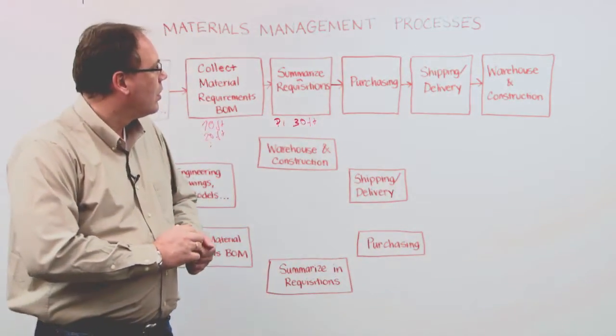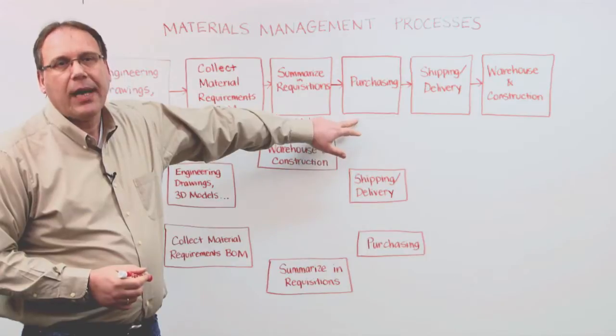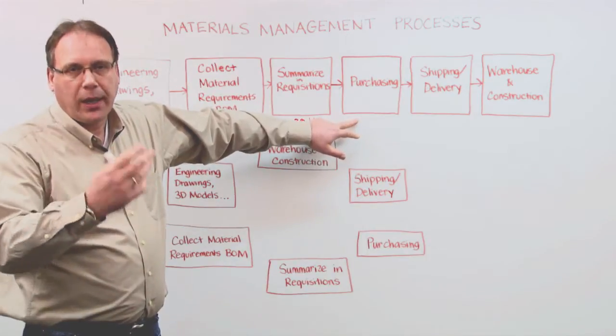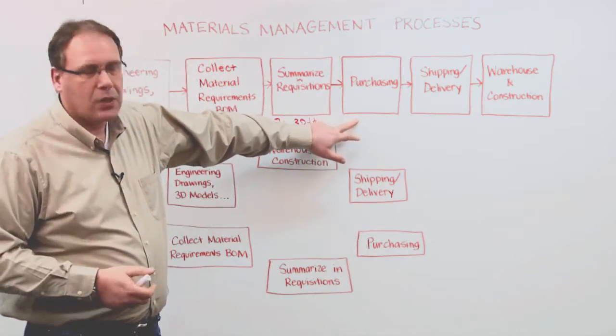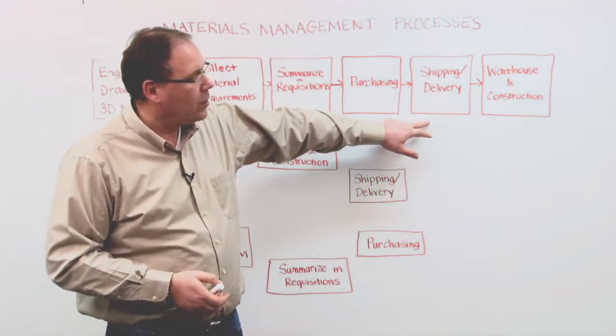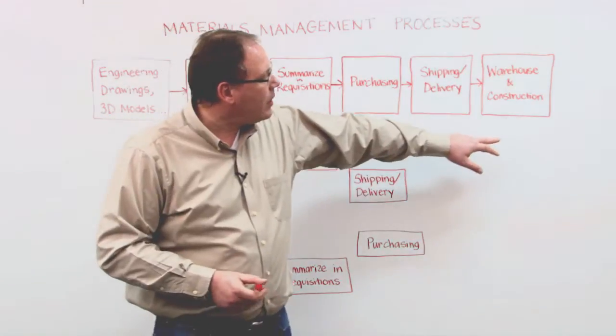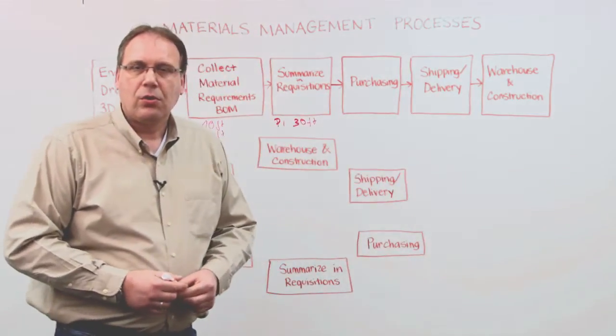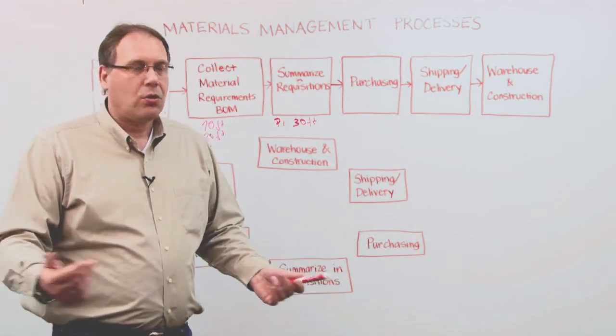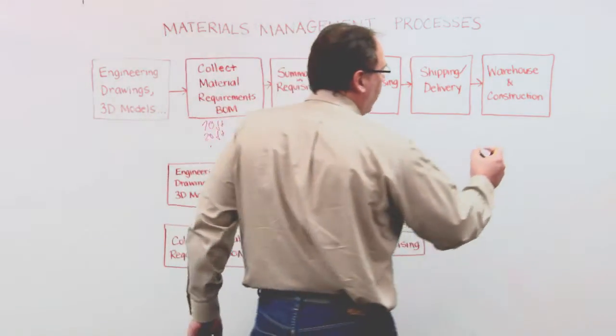Then you go through the purchasing process where you buy the materials from a supplier in the US or wherever you buy it, and it gets delivered. You do shipment and delivery of these items and finally it gets delivered to the construction site, so you'll have the 30 feet of pipe.